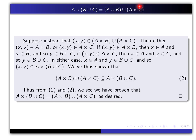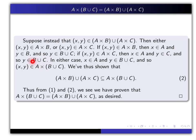So now I have to show that the right-hand set is a subset of the left-hand set. I begin by taking a typical element of this set. Suppose X, Y is an element of the right-hand set. Now this time, I have to see the union first. What does it mean to be an element of a union? It means either X, Y is in A cross B or X, Y is in A cross C. So we'll take the two cases separately. If X, Y is in A cross B, then X is in A and Y is in B by definition of Cartesian product. If X, Y is in A cross C, then X is in A and Y is in C, and therefore Y is in B union C, because C is a subset of B union C.